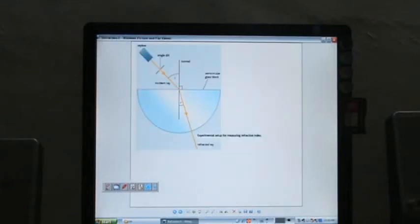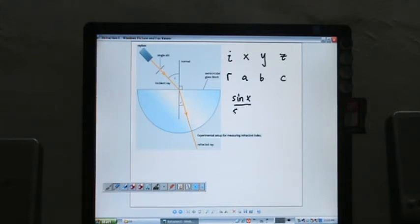This is exactly the experiment that they do to get different values of i with the corresponding r. Let's say you have x, y, z and then you have the corresponding a, b, c. So you plot or you calculate x over sin a and you realize one striking similarity.